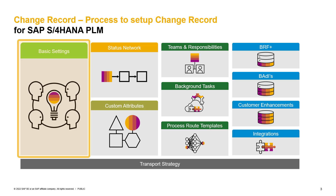Secondly, what kind of change record types do you need, and which change items should be included in which change record type? Thirdly, do you want to use the process route or the flexible workflow on the change record? If yes, for which change record type do you want to use the process route, and for which the flexible workflow?